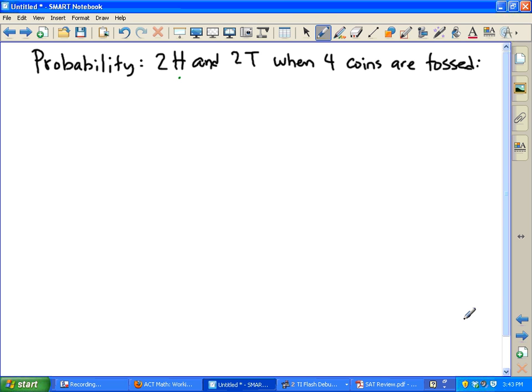This is an SAT or ACT review problem dealing with probability. We want to find the probability of getting two heads and two tails when we toss four coins.